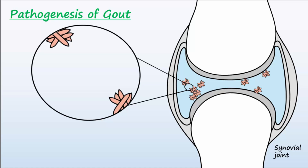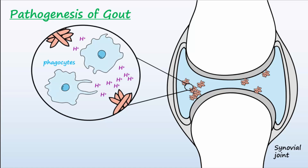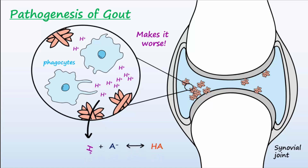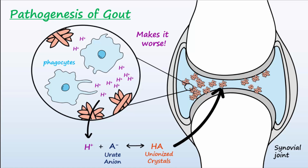Once inside the joints, phagocytes release hydrogen ions in an attempt to attack and break down the crystals that have formed. Phagocytes are attempting to help, but actually make the condition worse, allowing additional crystals to form. This happens as increased hydrogen ions, produced by the phagocytes, combine with urate anions to form additional HA, which is the anionized form that is less soluble in aqueous solution and more likely to form into crystals. The anionized form, or HA, is much less soluble in solutions and precipitates to form crystals.